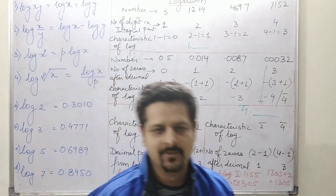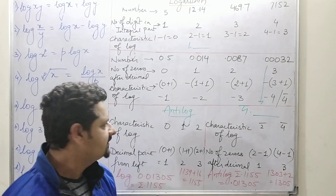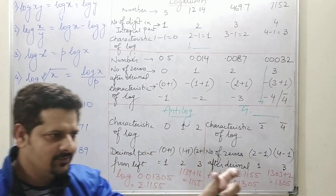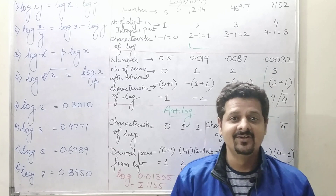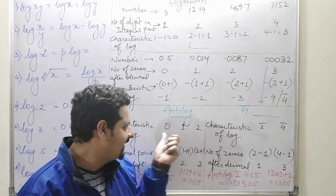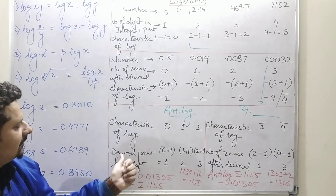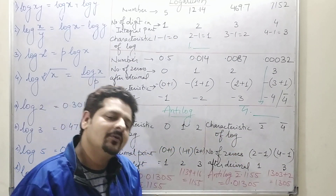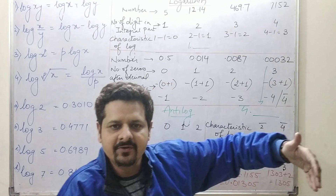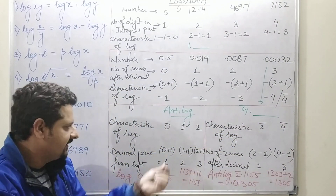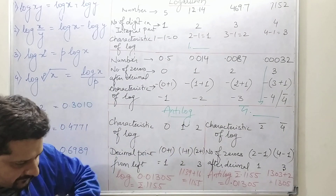Now let's go for antilog — it is completely the reverse of log. When you have a log value and need to find antilog, the characteristic of the log tells you where to place the decimal point. For antilog, you always find the mantissa value from the table using the digits after the decimal point. For a characteristic of 0, you add 0 + 1 = 1, meaning you place the decimal point after one digit from the left.